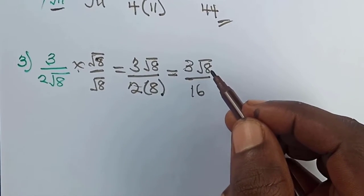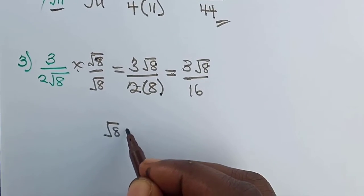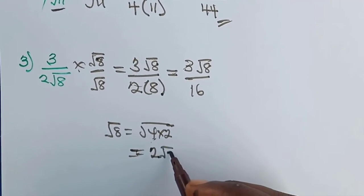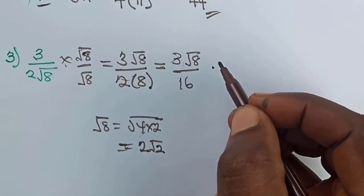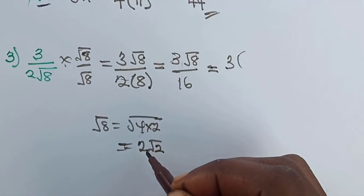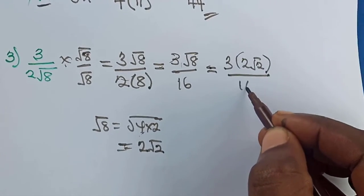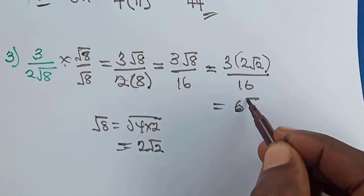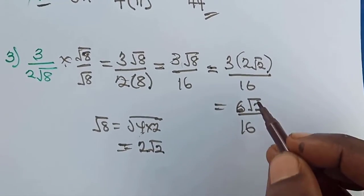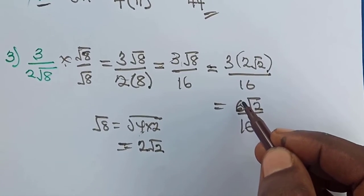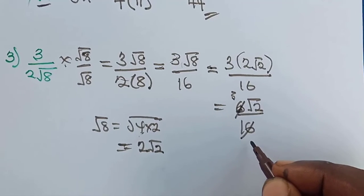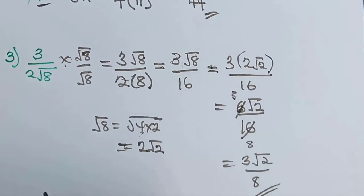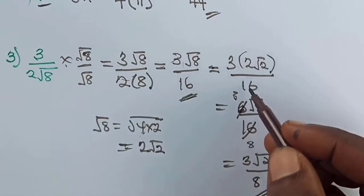However, root 8 is not in its simplest form, so we simplify further. Root 8 equals root 4 times 2. Since 4 is a perfect square, root 4 equals 2, so root 8 equals 2 root 2. Replacing root 8 with 2 root 2, we get 3 times 2 root 2 over 16, which is 6 root 2 over 16. We then reduce: 2 divides into 6 three times and into 16 eight times, giving us 3 root 2 over 8. So we have rationalized and fully simplified the expression.